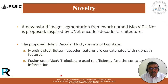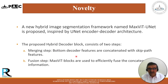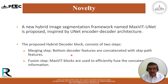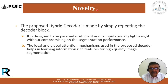The novelty of our proposed work: we propose a new hybrid image segmentation framework named MaxVIT-UNet, inspired by the UNet encoder-decoder structure. It is an autoencoder where we compress features into information-rich bottleneck features and then decompress or upscale them in the decoder to get the segmented mask. The proposed hybrid decoder block consists of two steps: a merging step where bottom decoder features are concatenated with skip path features, and a fusion step where MaxVIT blocks efficiently fuse the concatenated information.